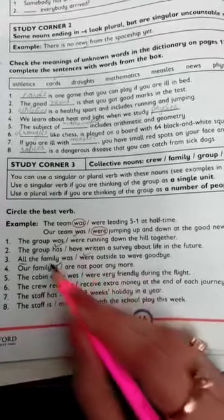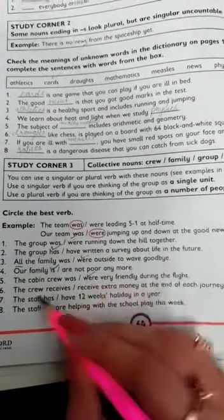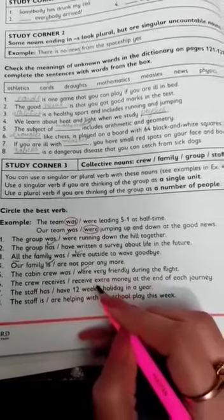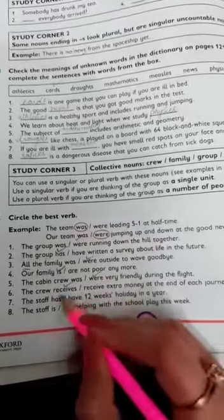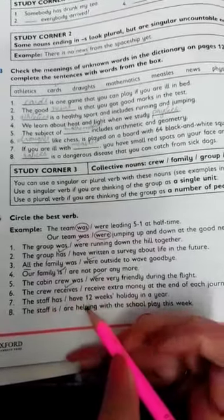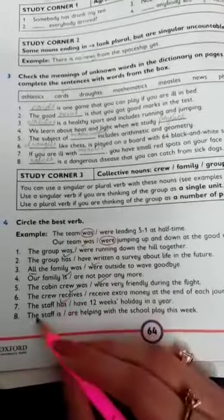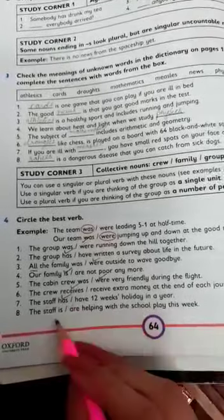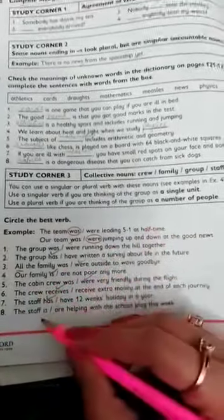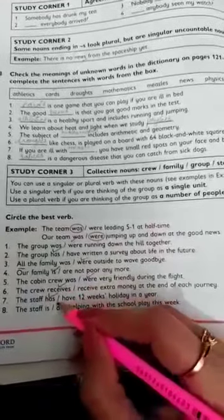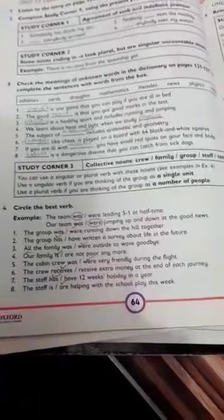The crew blank extra money at the end of each journey. Here we are talking about them as a group, so it will be 'receives.' The staff blank have 12 weeks holidays. They are talking about a single unit. The staff blank helping with the school play this week. They are talking about all of the staff members, so the verb will be plural: 'are helping.'